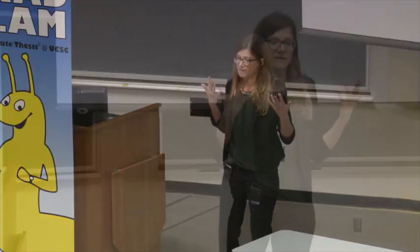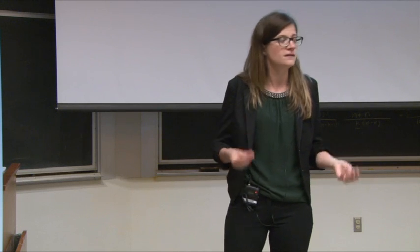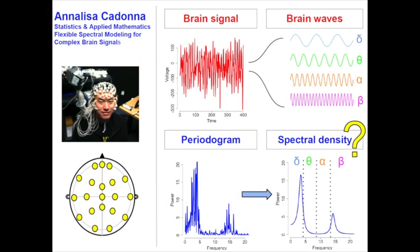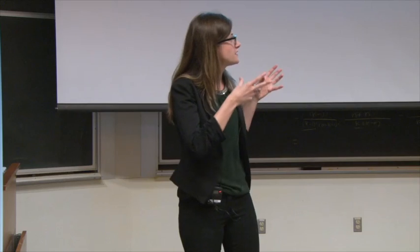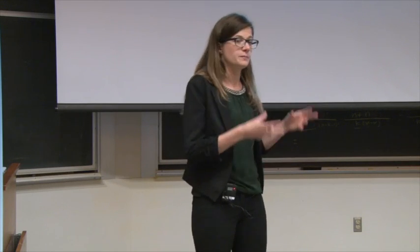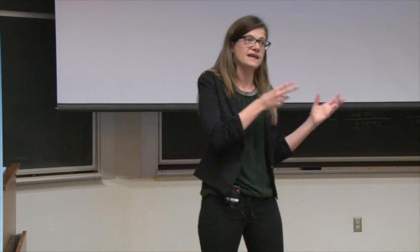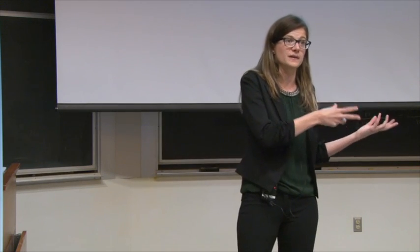The closest thing that we have to the spectral density is the periodogram. We can obtain the periodogram with a transformation directly from the data. But the periodogram is not a good estimator — it's really noisy, and it doesn't get better as the number of data points increases. So what we do is place a sophisticated statistical model on the periodogram to get reliable estimates of the spectral density.